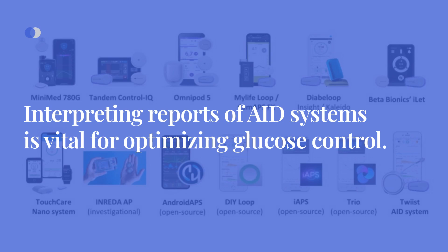Understanding and effectively interpreting reports for automated insulin delivery systems are vital for optimizing glucose control and overall diabetes management. By following a structured approach and collaborating with healthcare providers, users can make informed adjustments, monitor trends, and enhance their journey toward better glucose management and well-being. Remember, managing your diabetes is a continuous process, and with diligent monitoring and proactive engagement with your reports, you are taking significant steps toward achieving better glucose control and overall well-being.